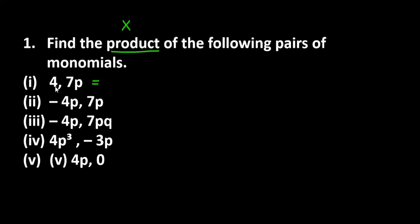You have two monomials. One is 4 and the other is 7p. You want to multiply them. 4 and 7 gives you 28. So the answer is 28p.